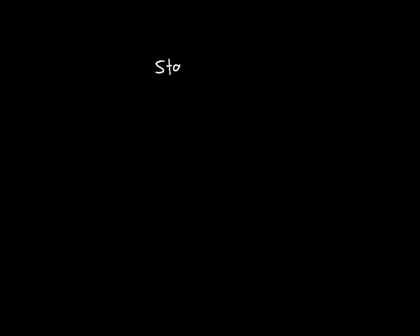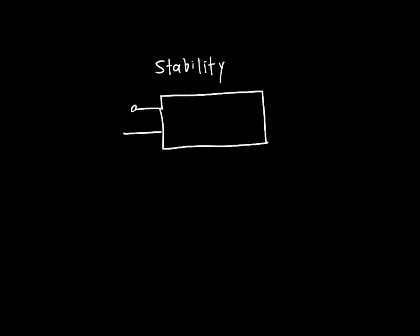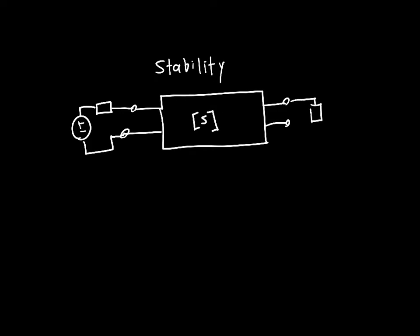In this video we're going to talk about stability of microwave amplifiers, and specifically stability of the two-port networks that characterize them. So if we've got a two-port network characterized by a certain set of S-parameters, let's say we apply a source to it with a certain source impedance, and we terminated in a certain load with a certain load impedance.